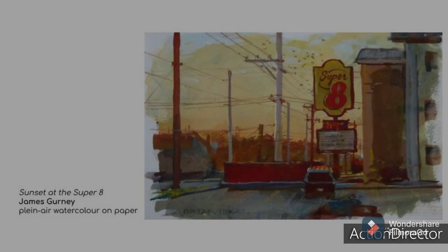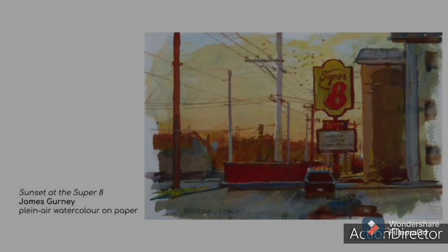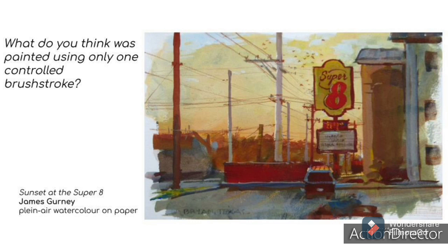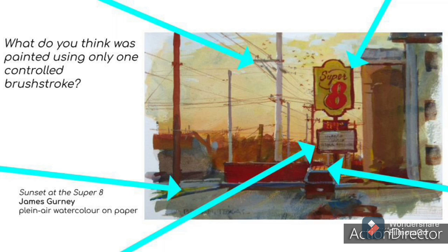This piece is called Sunset at the Super 8. It's a plein air painting by James Gurney made with watercolour on paper. So what do you think was painted using only one controlled brushstroke? The telephone poles were done in this manner. Also the electrical wires with a very thin brush. And any other small detail you might see that really is just the width of a brush.